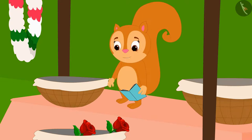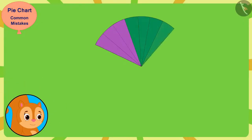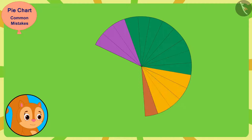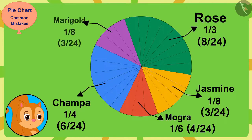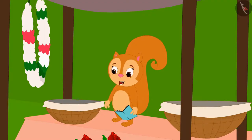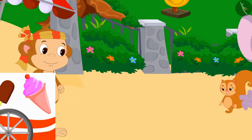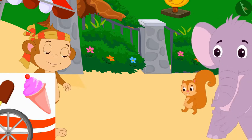Chanda realized her mistake — it means rose is the most popular flower, not Champa. She decided to rectify her mistake and make the pie chart properly. Chanda then divided the pie chart into equal parts and made it without any mistake. She thanked Appu and said she would never repeat this mistake again. To thank Appu for his help, Chanda bought him an ice cream from Baban's ice cream stall, and both went to eat ice cream.